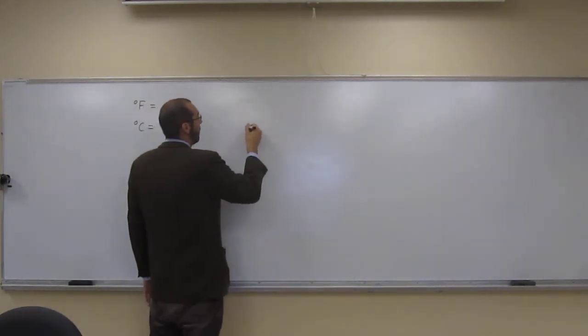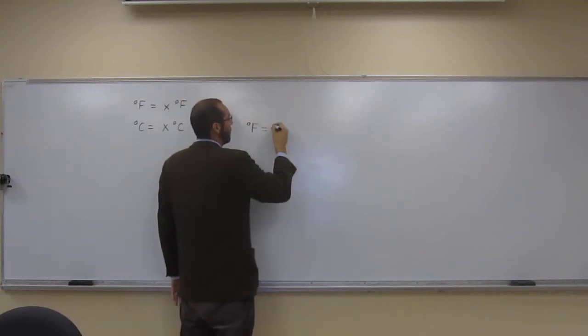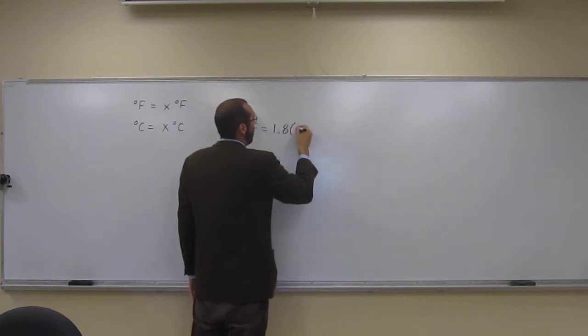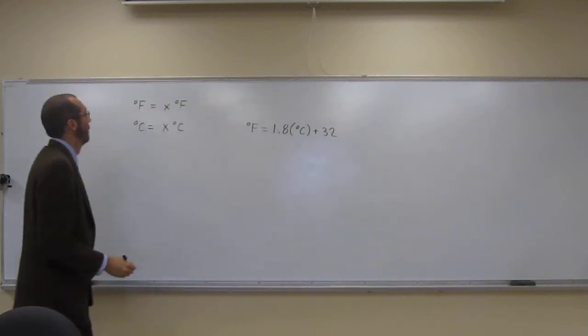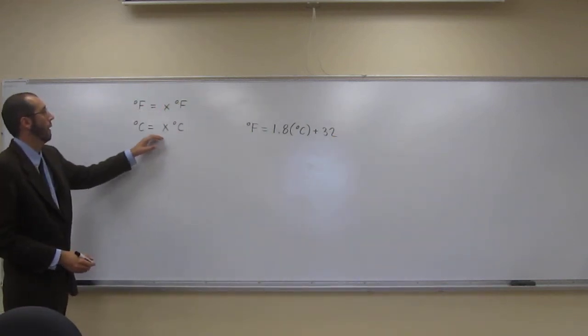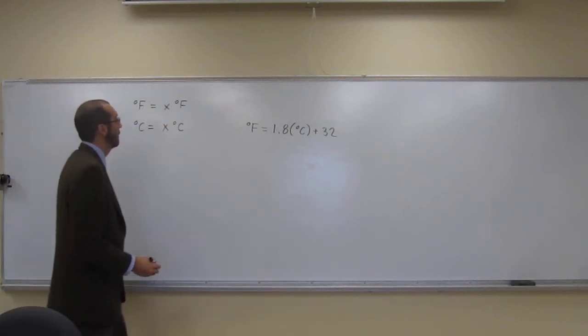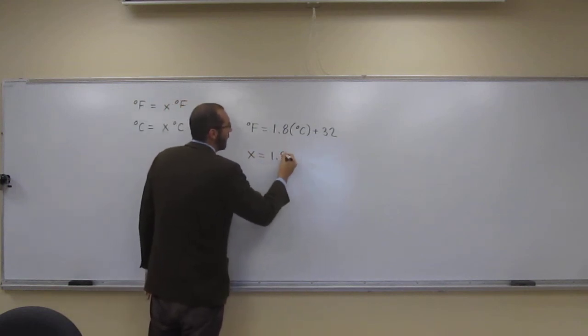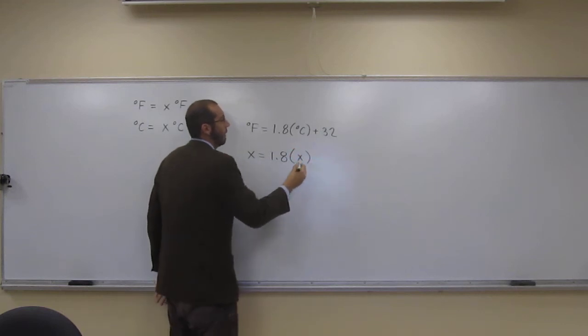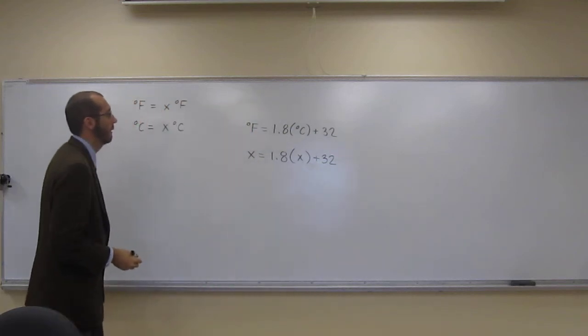So in this problem, remember your temperature conversion equation. So degrees Fahrenheit equals 1.8 times degrees Celsius plus 32. In order to do this, you're going to have to plug in x for both degrees Fahrenheit and degrees Celsius. So nothing special. The problem sounds scary at first, but really, when you think about it mathematically, it's not so bad.